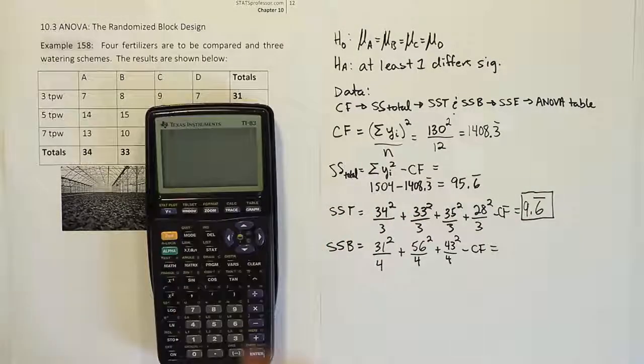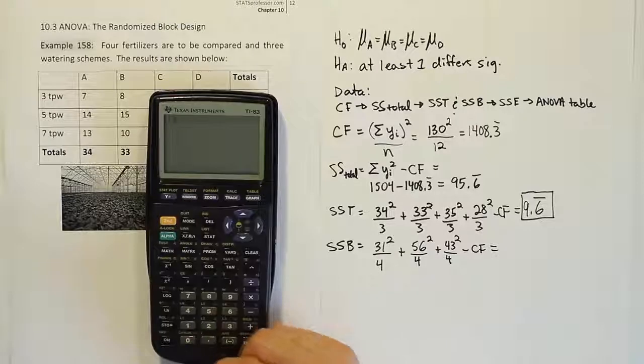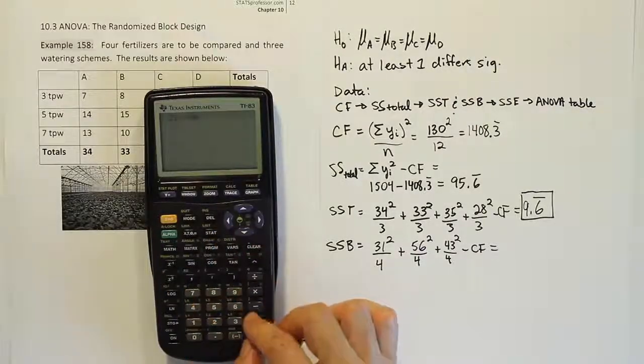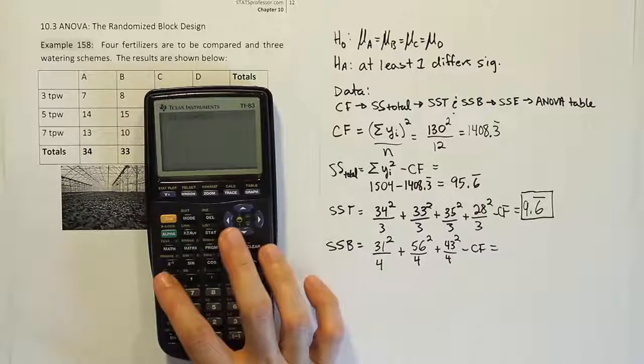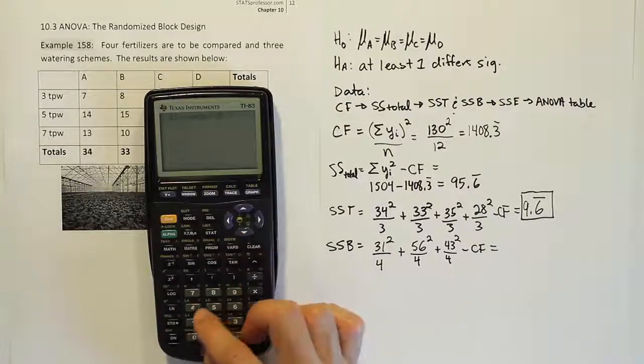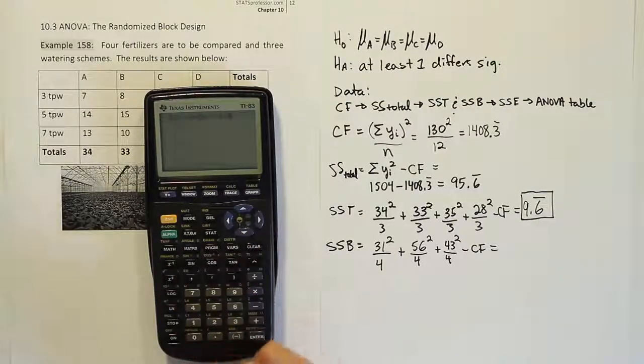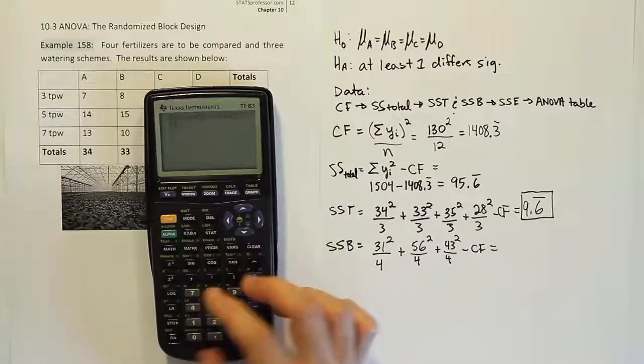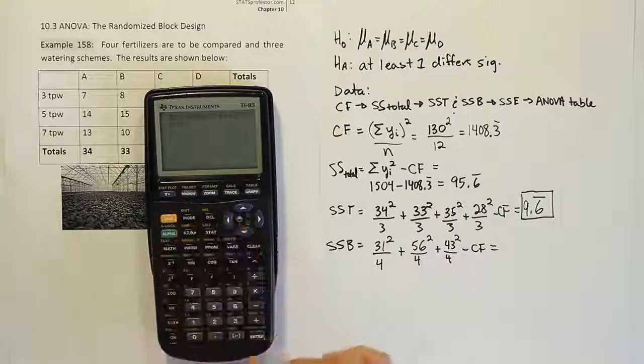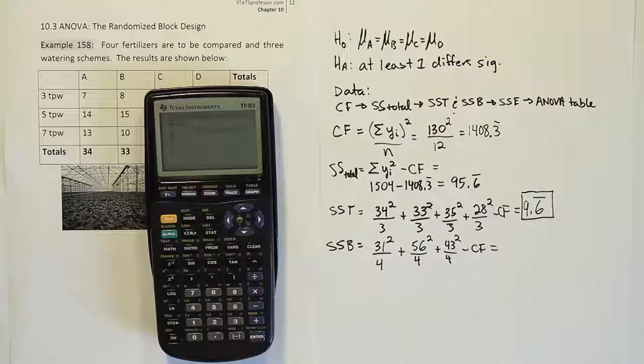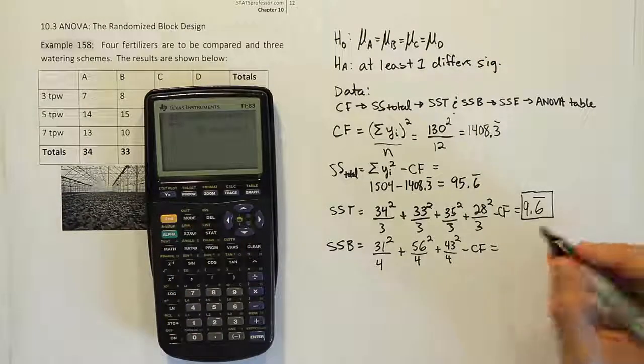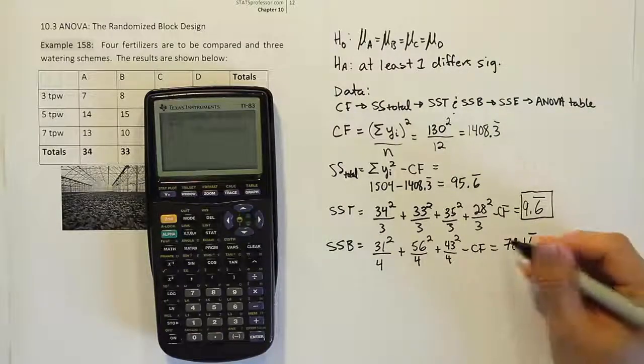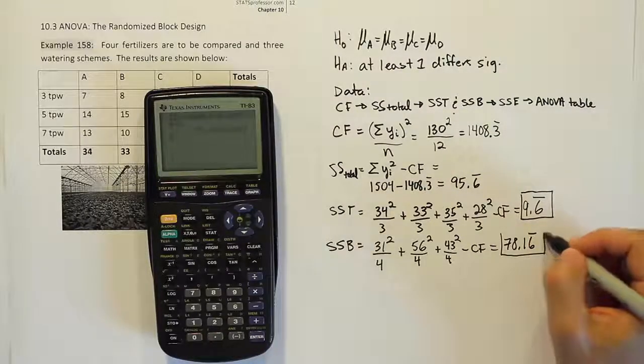Alright, now, let's go ahead and type that stuff in then. So we'll have 31 squared, divided by 4, plus 56 squared, divided by 4, plus 43 squared, divided by 4, minus the correction factor, which I stored in my calculator. So I get 78.16 repeating, 78.16 repeating. Alright, and that's your sum of squares for blocks.